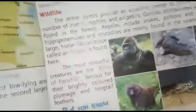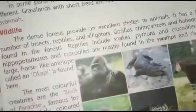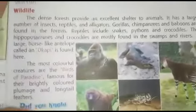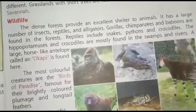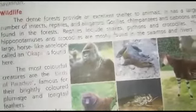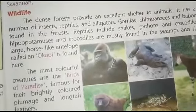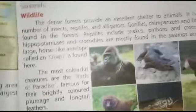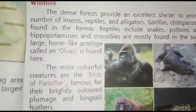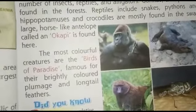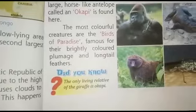The forest is home to the largest number of insects, reptiles, and alligators. Gorillas, chimpanzees, and baboons are found in the forest. Reptiles and crocodiles are mostly found in the swamps and rivers. A large horse-like antelope is also found here. The most colorful creatures are the birds of paradise, famous for their brightly colored plumes and long tail feathers. The only living relative of the giraffe, the okapi, is also found here.